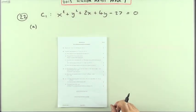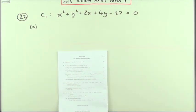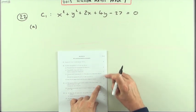Number 22 from the 2013 Higher Maths Paper 1. Circles question. Loads of marks here, 12 marks.